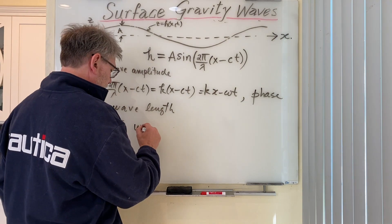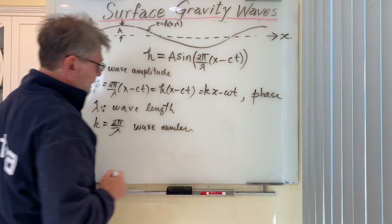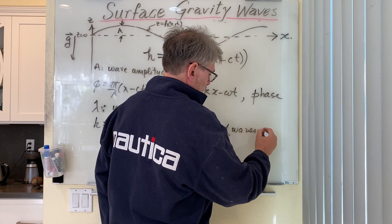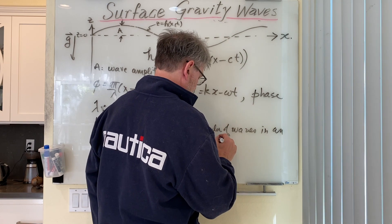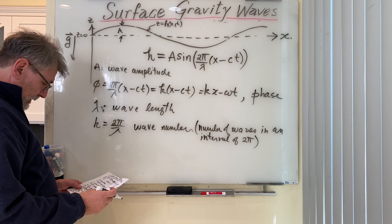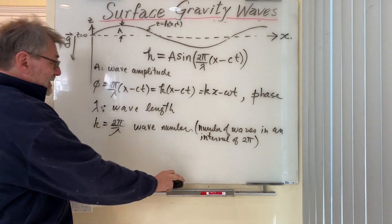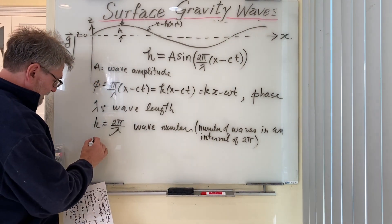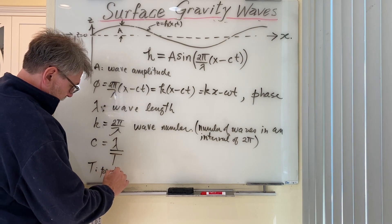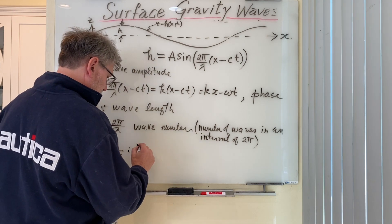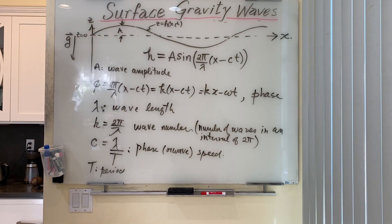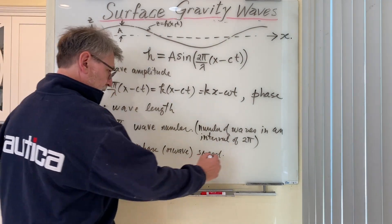k is known as the wavenumber — you can think of it as the number of waves per 2π radians. c is the phase speed of the wave, equal to λ over the period T. T is the period, which has units of seconds, and c has units of meters per second.